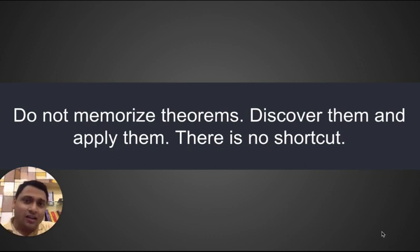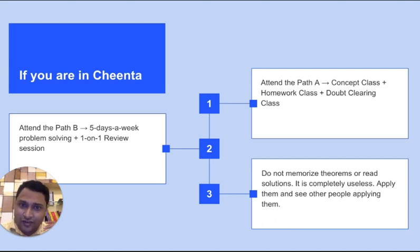So if you are in Chenta, first thing you do is you attend Path A. Path A in the math Olympiad, IOQM math Olympiad program, has three classes every week. Concept class, homework class, doubt clearing class. Make sure to attend all three of them.